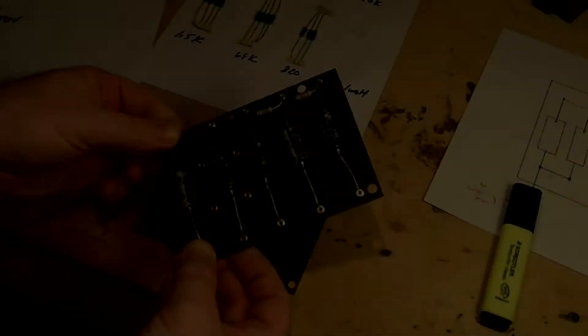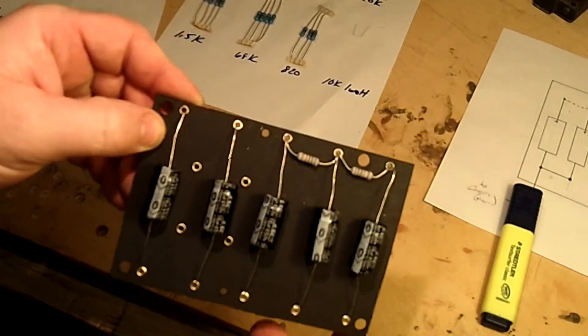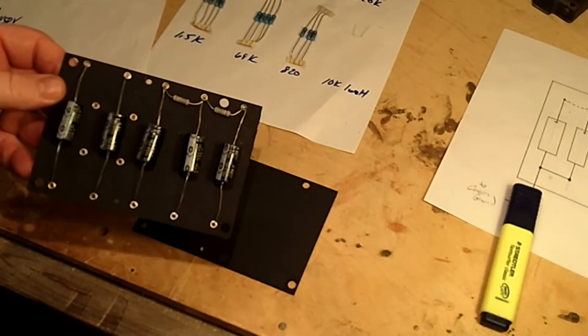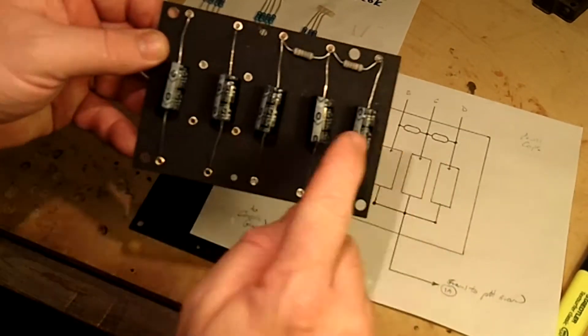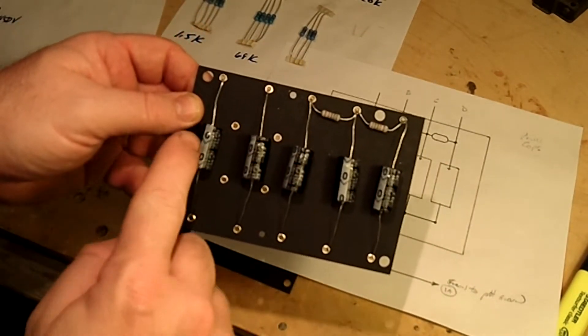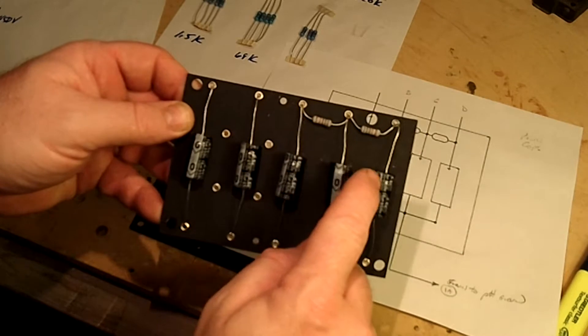Now we've got it populated, again just go back through. Make sure you've got your power capacitors, the polarity is right on all five. You've got your resistors in the right spot.